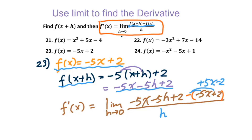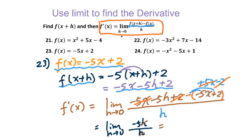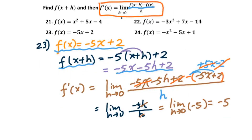Then we combine like terms. Everything in the parentheses cancels out: -2 and +2 cancel, and +5x and -5x cancel. We are left with the limit as h approaches 0 of -5h over h. Then we reduce, getting the limit as h approaches 0 of -5, which equals -5. Therefore, the derivative of this linear function is -5.